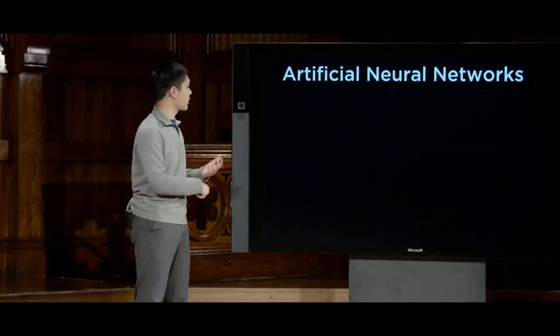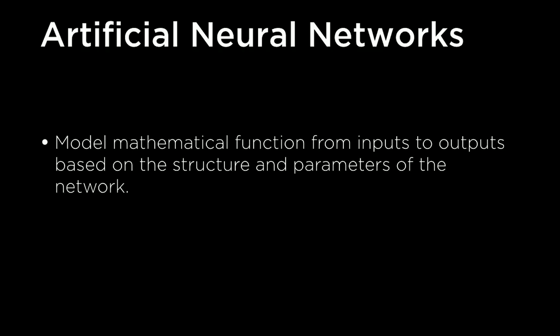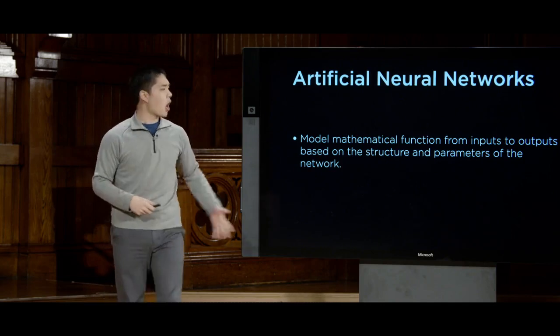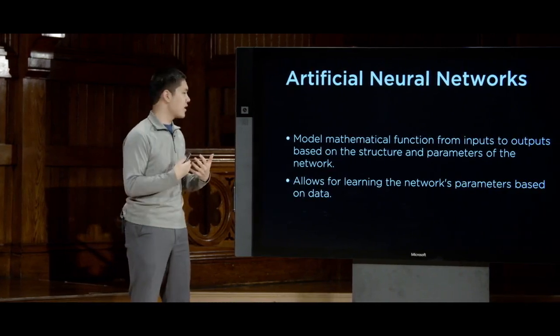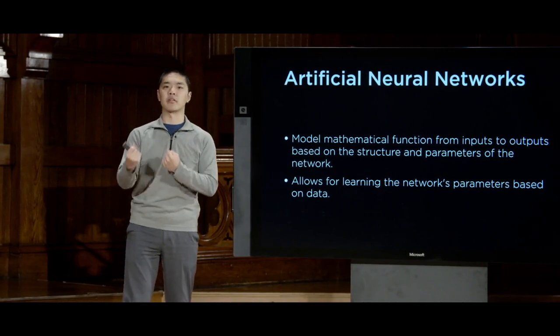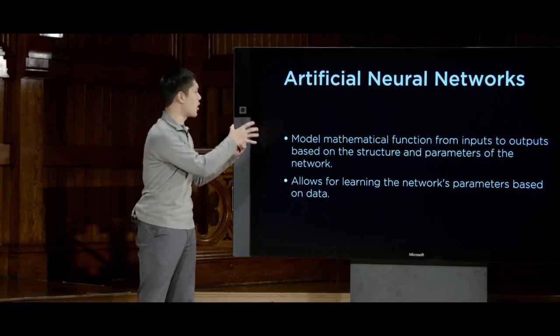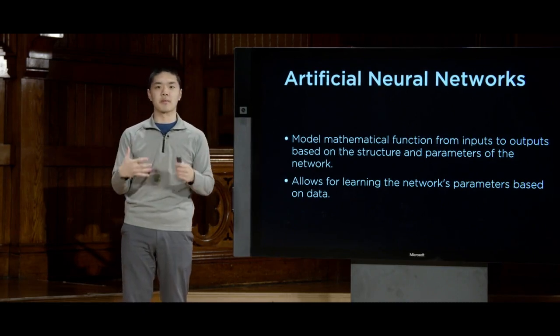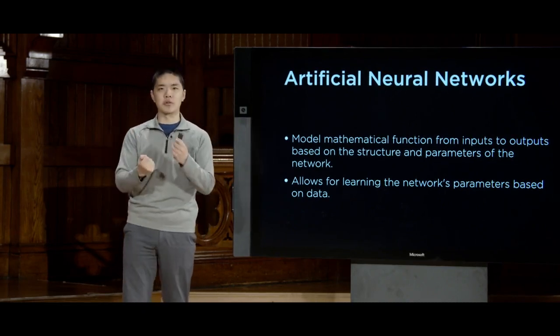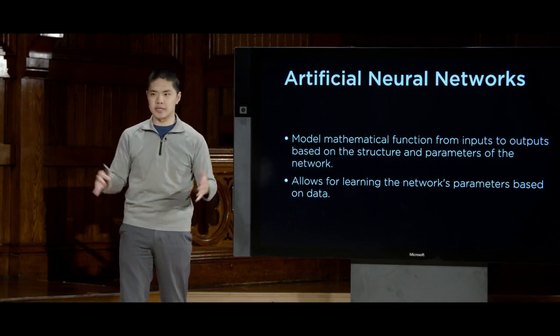Artificial neural networks will allow us to model some sort of mathematical function. Every neural network is really just some mathematical function mapping certain inputs to particular outputs based on the structure of the network. Depending on where we place particular units inside the neural network, that determines how the network functions. We want a model where we can write code that allows the network to figure out how to model the right mathematical function, given a particular set of input data.